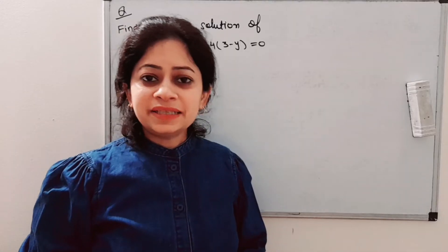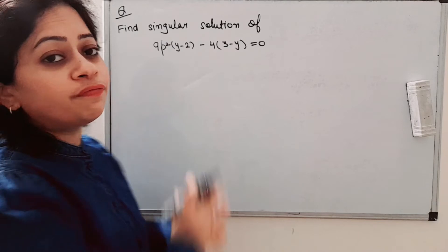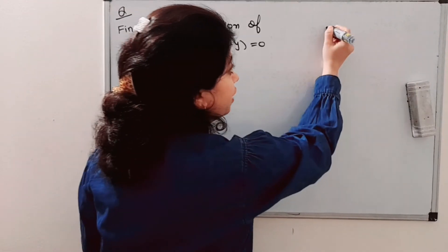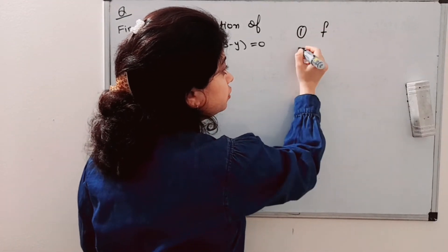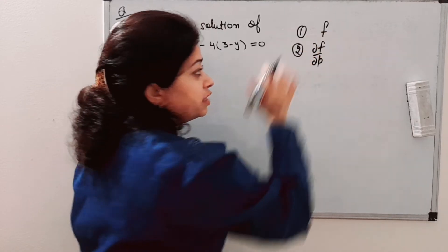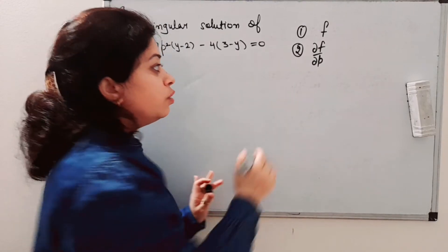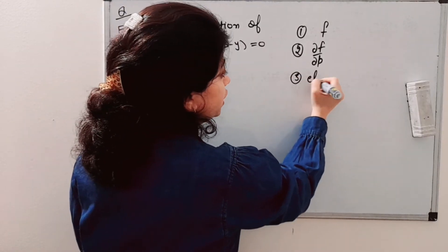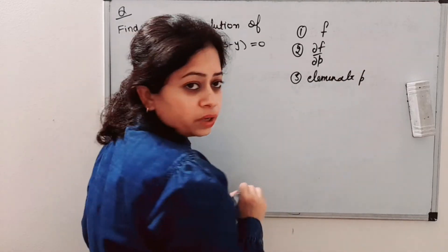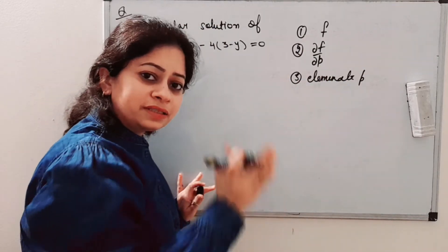Now we have the first example. I hope you have understood the method of finding the singular solution. If you have a given differential equation, you need to differentiate it with respect to p — the differential equation is in one-parameter family p. And then you need to eliminate p between equations 1 and 2.